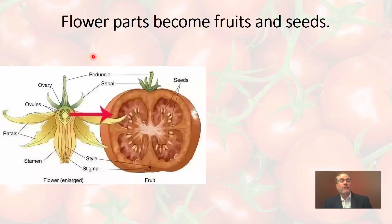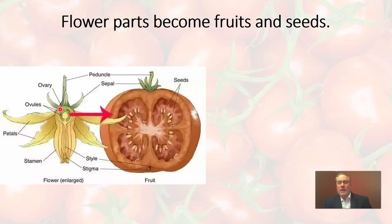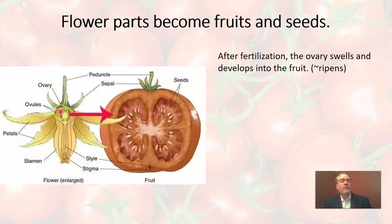After fertilization — when the male and female reproductive cells are united — changes begin in the flower. Immediately after fertilization, many of the petals begin to fall away since they're no longer needed. This leaves only the ovary with the ovules inside. The sepals often stay as well, but the rest of the flower withers and falls away.